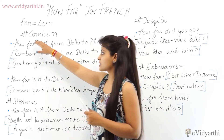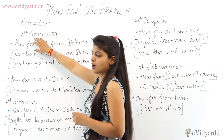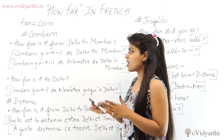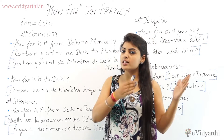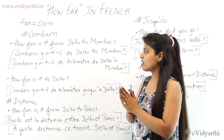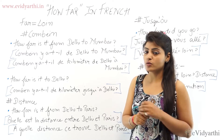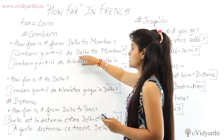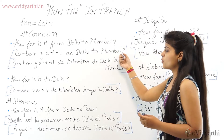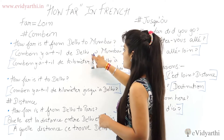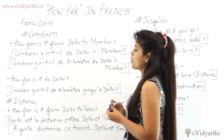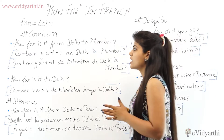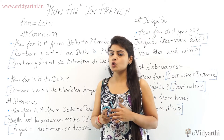We'll start with the first category which is 'Combien'. The first example: how far is it from Delhi to Mumbai? So, we'll use 'Combien'. It will be: 'Combien y a-t-il de kilomètres de Delhi à Mumbai?' — How far is it from Delhi to Mumbai?